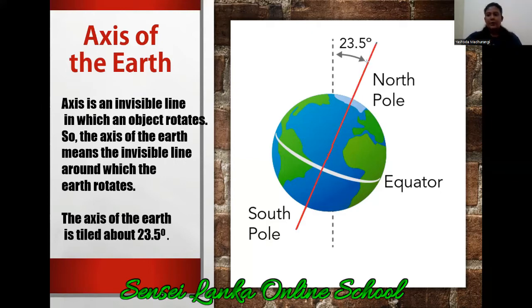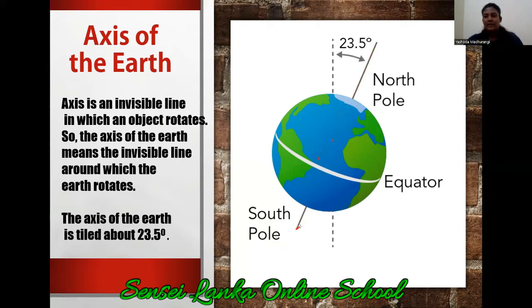In my picture you can see it in red colour. But now it is invisible — now you can see it, now you can't see it. It is invisible. So my dear children, there is a line like this. This line that I am showing in red colour is going across our earth.